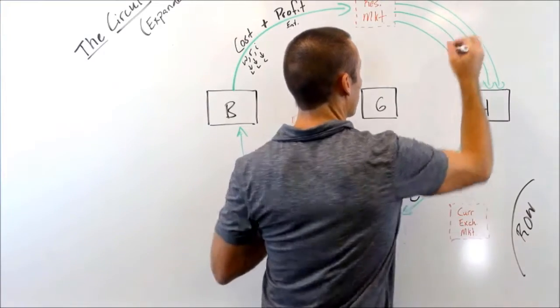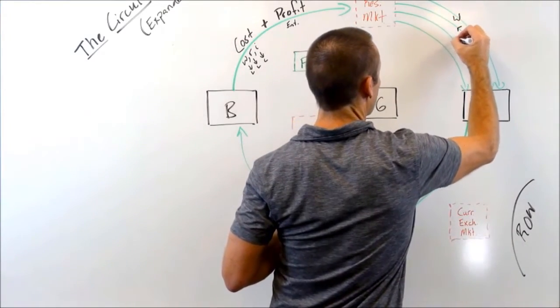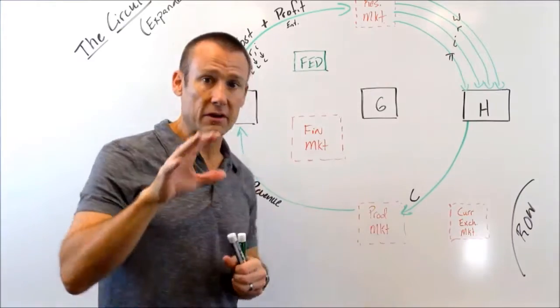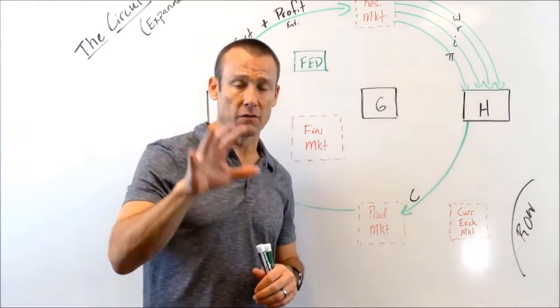So let's go ahead and get that labeled really quickly. Wages, rent, interest, and profit. There is the main circle of the circular flow.